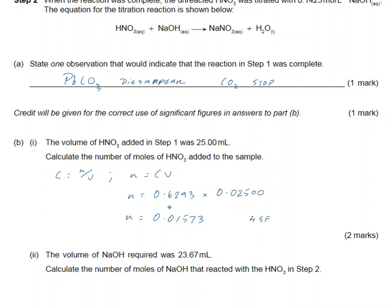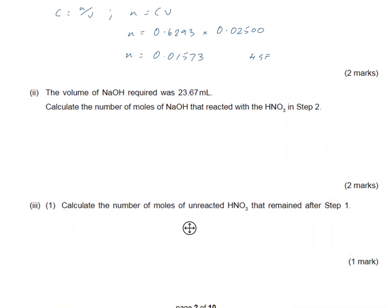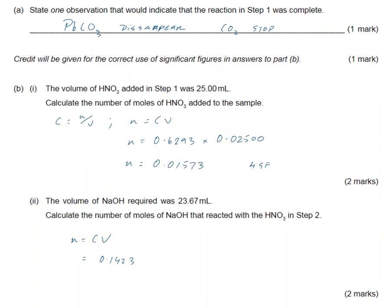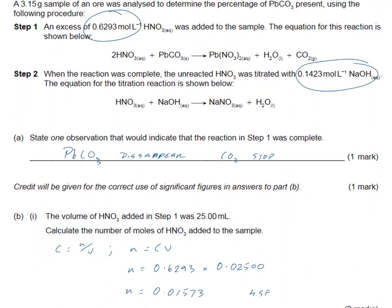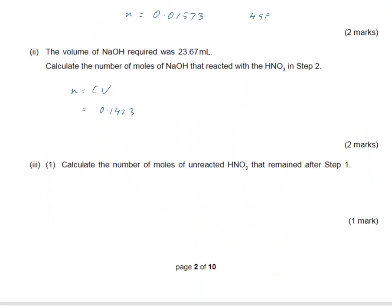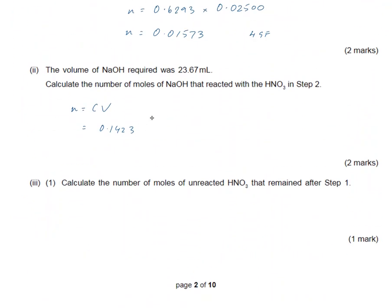Going down to the next one, the volume of sodium hydroxide required to neutralize after it finished was 23.67 mL. Calculate the number of moles of sodium hydroxide that reacted with the nitric acid. N equals CV as before, so we have 0.1423 - that's the concentration - times by the 23.67 mL.